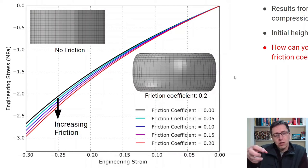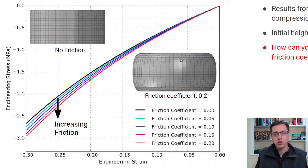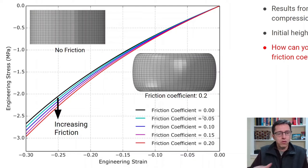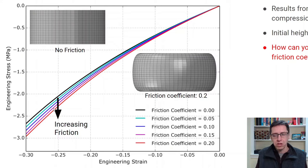That makes sense — the friction doesn't allow the specimen to expand radially as it likes to, so it will take more force to compress the specimen. That's why the stresses are larger in magnitude. We can see the influence from zero friction up to a friction coefficient of 0.2, and that's a relatively big difference. So that's very important in many cases.